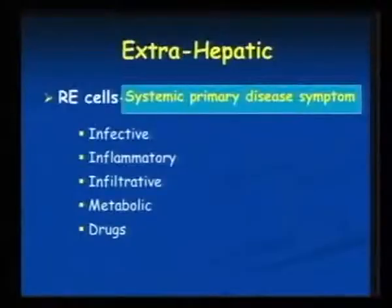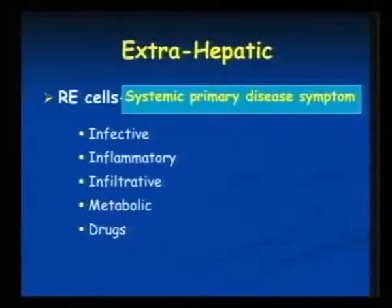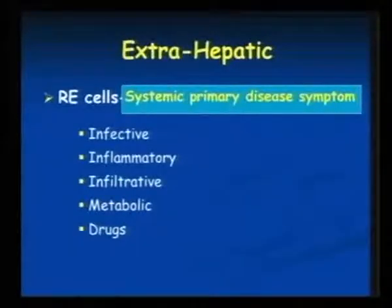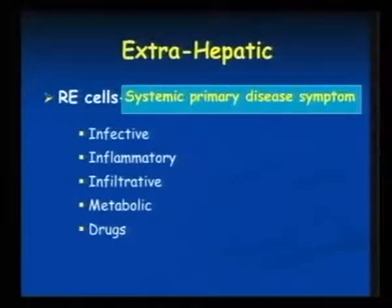Coming to extrahepatic, as we said, we have four structures in the liver. Coming to RE cells — what clinical symptoms do we get when we have RE cell involvement? Like whatever the etiology, systemic disease, those are the primary symptoms you see. In a patient who has a systemic disease with RE cell involvement, you can have hepatosplenomegaly and systemic disease symptoms. That may be infective — many infections like typhoid, malaria, leptospirosis — all can involve multiple systems including liver, especially RE cells.